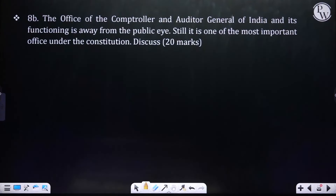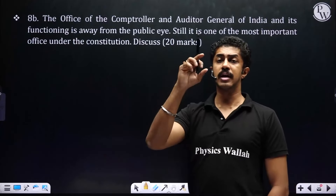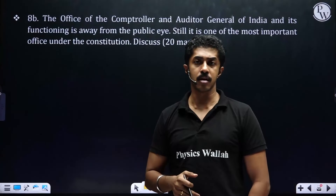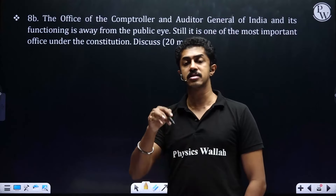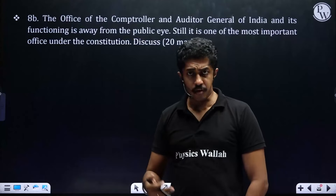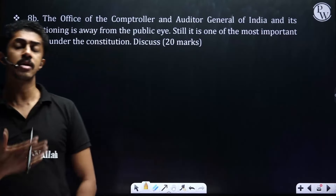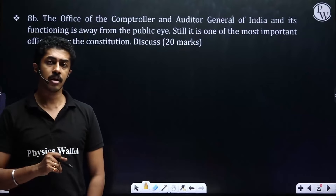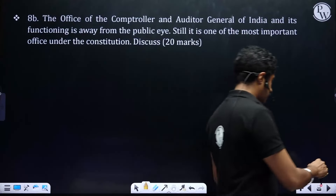Next: 'The office of the CAG of India and its functioning is away from the public eye, yet it is one of the most important offices under the Constitution - discuss.' Mention what CAG is, under which article it functions, the problem of not scrutinizing or submitting reports on time, and how this has diluted the functioning of the Public Accounts Committee. Support with proper data.